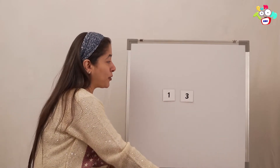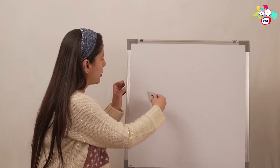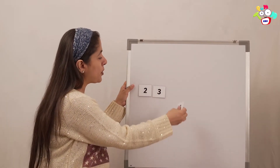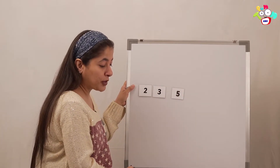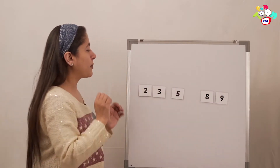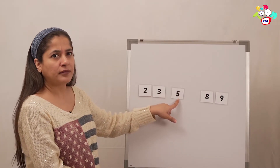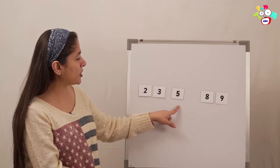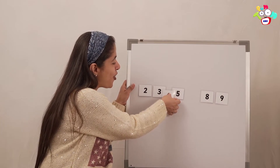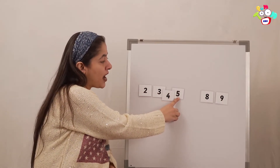Now I am going to put lots of numbers together. Let me see how many of you show me the correct numbers. I am going to put number 2, then number 3, then number 5, then number 8, and number 9. Let's read the numbers: 2, 3, 5. Is there something missing between 3 and 5? Which number is missing? Come on. Yes! Show me that. You are right, it's number 4. So: 2, 3, 4, 5, 8.